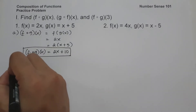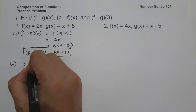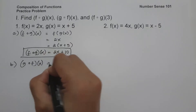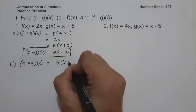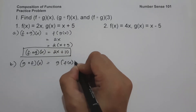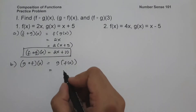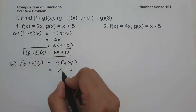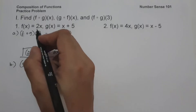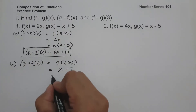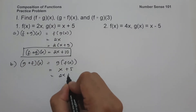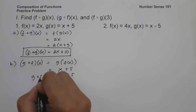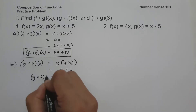On letter b, let us have g circle of f of x, and this will be g of f of x. The value of g is x plus 5, and this time the value of x is f of x, which is 2x. So we have 2x plus 5, and this is g circle of f of x.